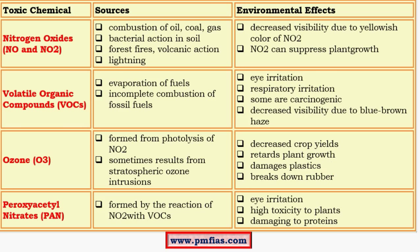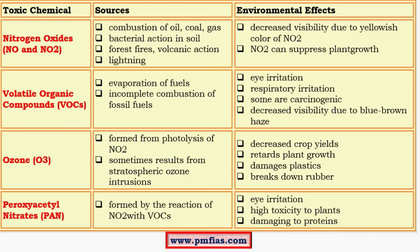Peroxyacetyl nitrates are formed by the reaction of NO2 and VOCs. The most important property of peroxyacetyl nitrates is that they damage proteins. So to summarize the key associations: damage to proteins from peroxyacetyl nitrates, damage to plastics and breakdown of rubber from ozone, blue-brown haze from volatile organic compounds, and yellow haze from nitrogen oxides. These are all important topics under the environment section in prelims.